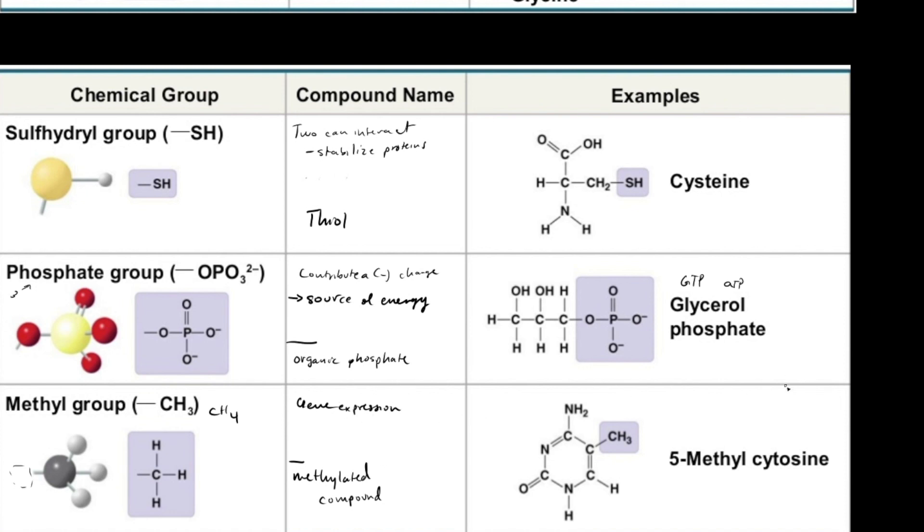Over here, you can see 5-methylcytosine, a component of DNA that has been modified by an addition of a methyl group right here, which makes it so that it's not expressed. And we'll take a look into that in our gene expression activity and video, as we go over the types of gene expression, how it can be expressed, and how it can be suppressed.